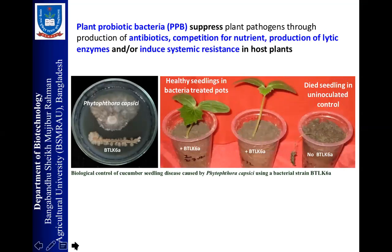This image I showed you in an earlier lecture: plant probiotic bacteria in dual culture against Phytophthora capsici. You can see Phytophthora capsici growth is inhibited. Obviously, some new antibiotics are produced by the BTLK6 Bacillus species which suppresses Phytophthora capsici and protects the plant from infection. Phytophthora capsici is a powerful root rot and damping-off-causing pathogen. Cucumber seedlings are survived here, but we didn't discover the specific antibiotic produced by BTLK6. Obviously, a new antibiotic could be discovered from this strain.